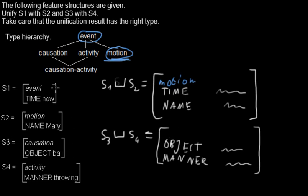Well, S3 is of type causation and S4 is of type activity, and the infimum of both of them is this one which is called causation-activity. So this new unified feature structure will be of type causation-activity.